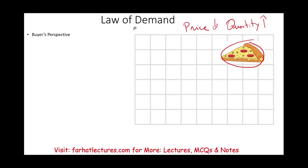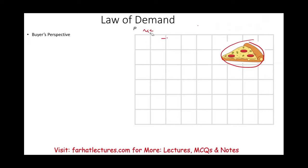And the opposite is true. When the price of a slice of pizza goes up, assuming you have a limited budget but you like to consume pizza, your quantity demanded for that pizza — you will demand less. So this is what we're going to be discussing: the law of demand, price, quantity, and the changes in quantity and changes in demand.